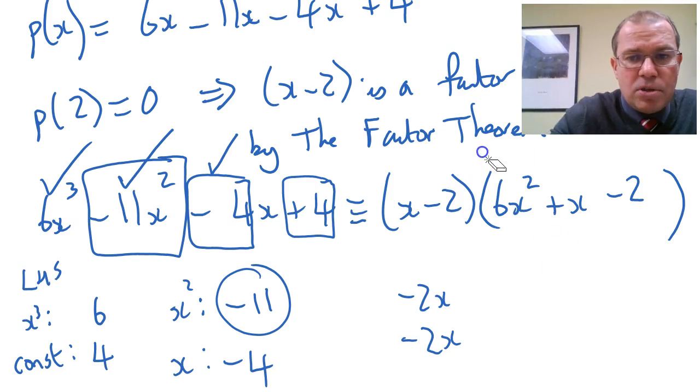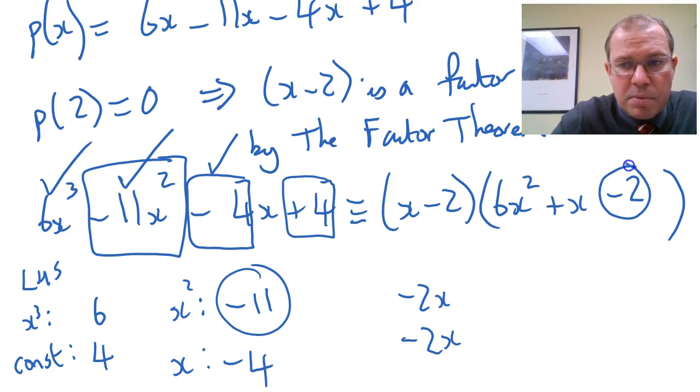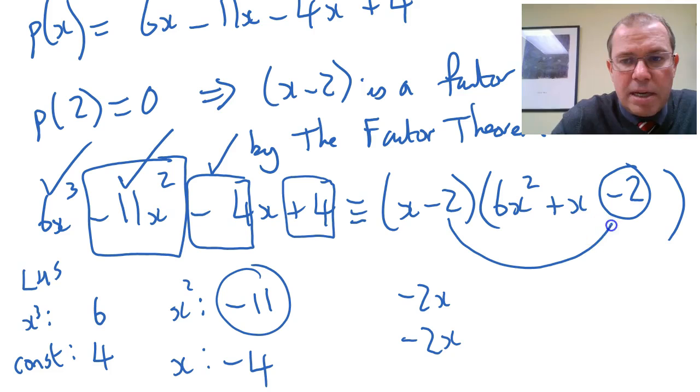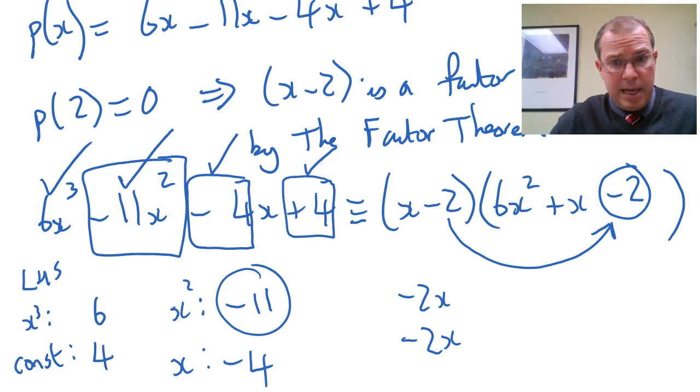Now, the beautiful thing is we talked at the beginning that we knew this number was minus 2, because minus 2 times minus 2 makes positive 4. So it all fits in really nicely, and we know we've got the factoring right. So that's how to use equating coefficients.